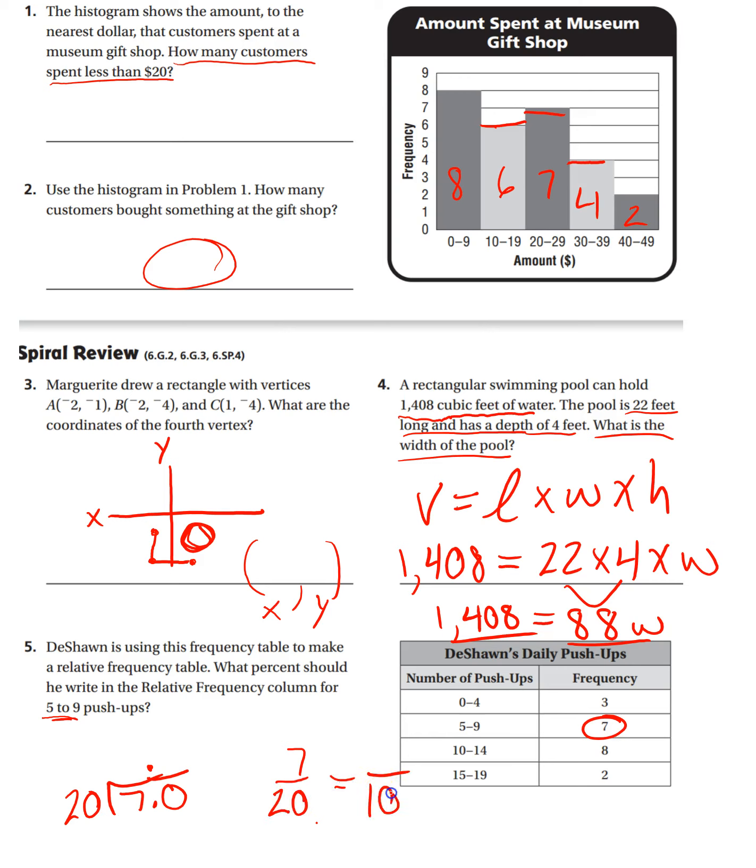Remember, percent is per 100. So, to get to 100, you have to multiply 20 times 5, and then you multiply the top by the same thing, and that's going to be your percentage.